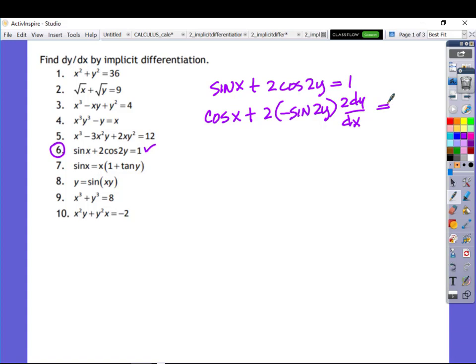And that equals 0. We just need to solve this for dy dx. Let's see, I'll just, 2 times a negative times this 2 is going to give me a negative 4 sine of 2y. Let's go backwards just a little bit. So we're going to get a negative 4 sine of 2y, dy dx,